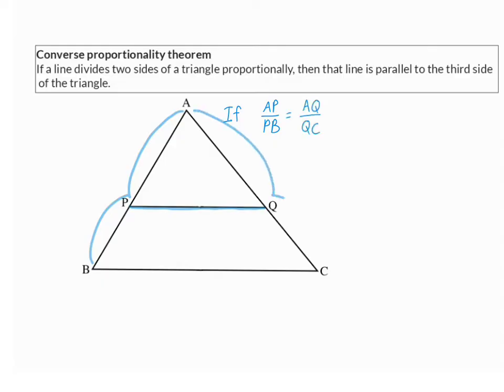AQ/QC — then we can accept that line PQ is parallel to the third side of this triangle, which is side BC.